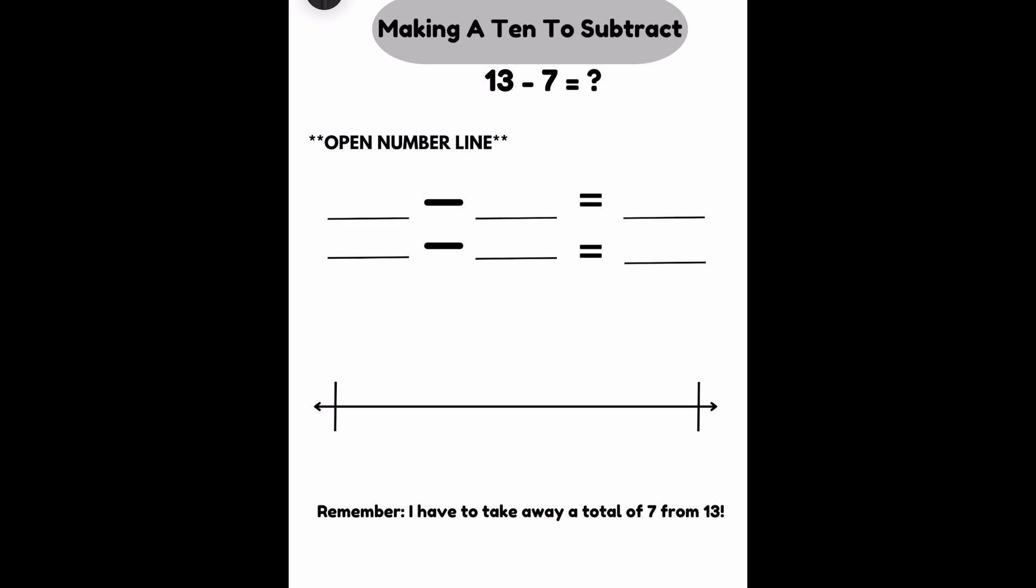Alright, we're still looking at 13 minus 7, but this time we're doing it with an open number line. So when I subtract on an open number line, we said adding, we move forward. But when we subtract, we have to move backwards. So I need to make sure that I start with 13 on that right side because I need to work backwards. Now, I need to show that I'm starting with 13. But remember, we need to make the 10.